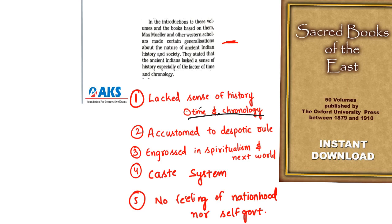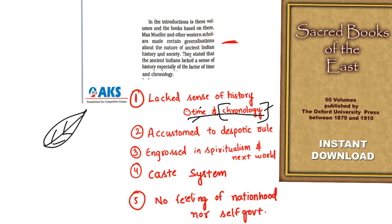Ancient Indian texts rarely specified when and where events happened — unlike the Chinese, who wrote chronology, time, and place precisely. So the claim that Indians lacked a sense of history and chronology was, to some extent, correct when compared to Chinese historiography. The second generalization was that Indians were accustomed to despotic rule — that only one king ruled over many people.